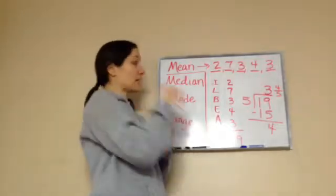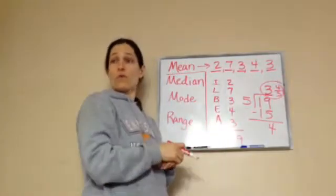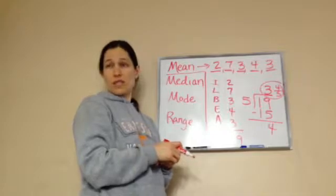So everybody would get three whole pancakes and then four fifths of the pancake. And that would be the total for everybody. So the average of this problem is three and four fifths. Do you understand that?